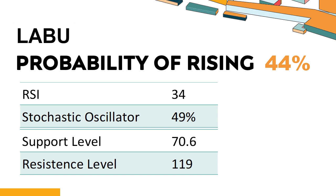LABU's short-term resistance level is 98.9. If it breaks through 98.9 during this session, it will look up to 119.